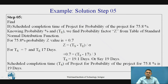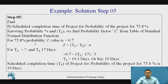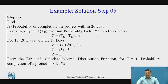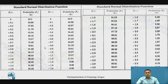Here the reverse approach is used: they give the probability completion percentage of 75.8 percent, and we need to find the normal deviate Z value. From the table, looking up 75.8 percent, the corresponding Z value is +0.7.